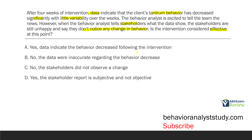Answer A: yes, data indicate the behavior decreased following the intervention. That may be true, but the stakeholders don't notice it and they seem unhappy. Could the data be wrong? Possibly. Could the stakeholders be observing something different? Possibly. But because the stakeholders are still unhappy and have not noticed a change, we can't consider this effective. Answer B: no, the data were inaccurate regarding the behavior decrease. We don't know that for sure — data can be accurate, but stakeholders still don't notice the change. Answer C: no, the stakeholders did not observe a change. It doesn't matter what our data show — if the stakeholders aren't feeling it, it's not effective, because we are working on their lives, not just our client's life. If the stakeholders' lives are not changing in a meaningful way, our intervention is not effective.